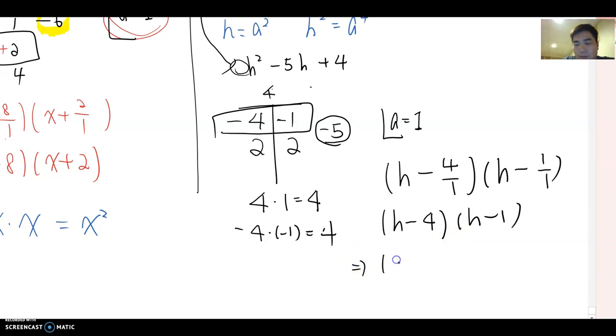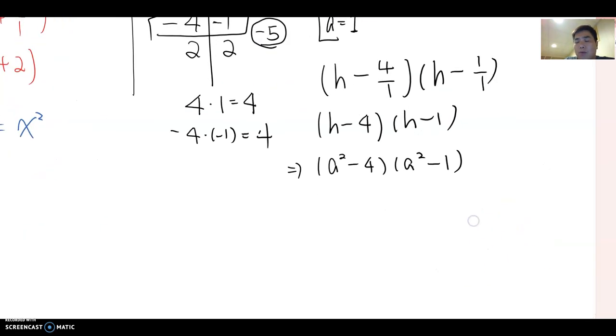So this one becomes a squared minus 4 and then a squared minus 1 here. Later we will talk more, but this is the final answer so far.